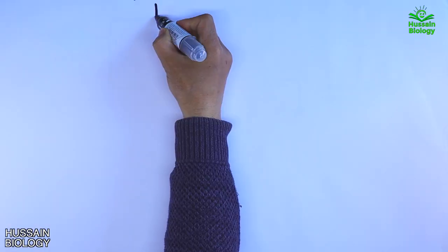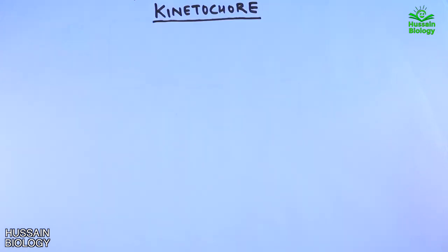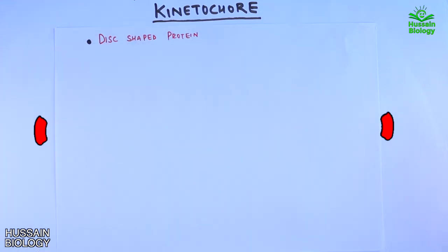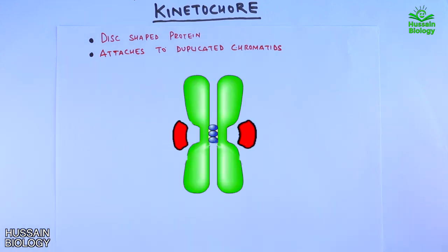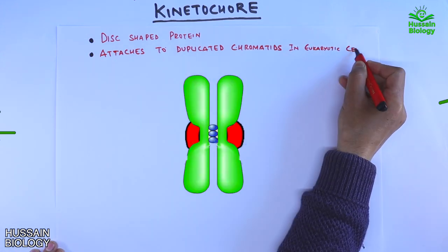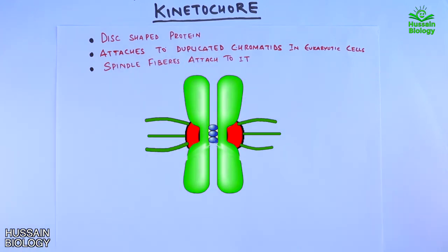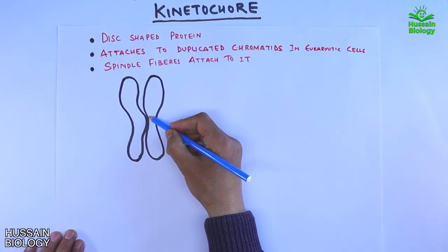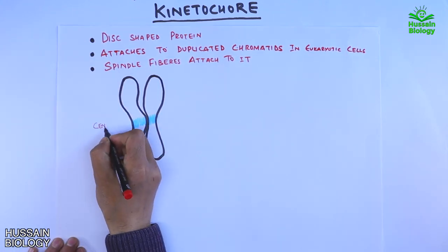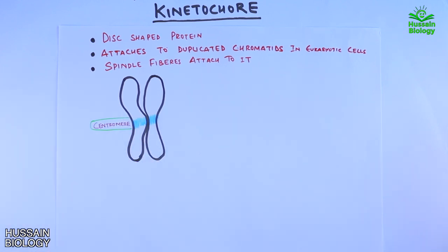In this video we'll be discussing the kinetochore, its structure and functions. It is a disc-shaped protein that attaches to the duplicated chromatids in eukaryotic cells. The spindle fibers attach to these kinetochores and are used to pull the chromatids to the poles. In the sample diagram we have the two sister chromatids linked together by cohesion proteins at the centromere.